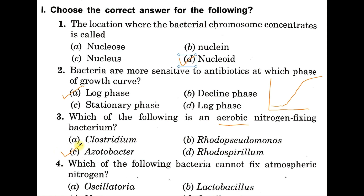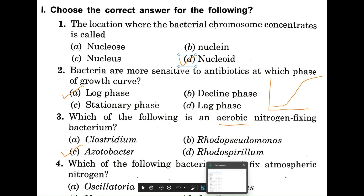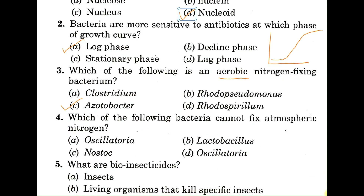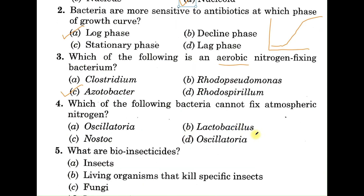Question number four: which of the following bacteria cannot fix nitrogen? Options: A: Oscillatoria, B: Lactobacillus, C: Nostoc, D: Oscillatoria. The organism which cannot fix nitrogen is B, Lactobacillus.